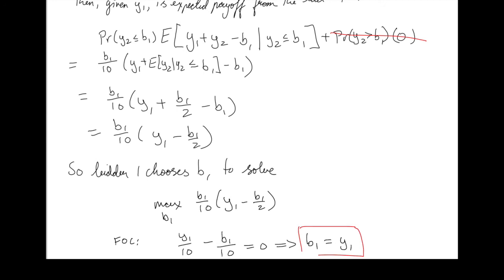By a symmetric argument, we would find that given that player 1 is bidding Y1, player 2 would want to bid Y2. What we see here is that when you have to worry about the other person's information in order to know what the value of the item is, you'll bid more cautiously.